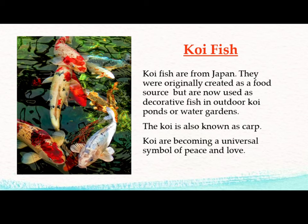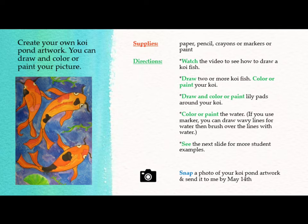Koi fish are from Japan. They were originally created as a food source but are now used as decorative fish in outdoor koi ponds or water gardens. The koi is also known as a carp. Koi are becoming a universal symbol of peace and love.